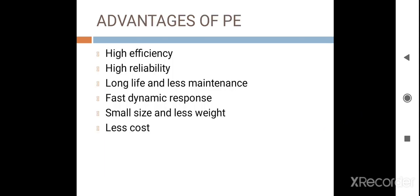If we talk about the advantages of power electronics, we should first consider efficiency — power electronics devices have high efficiency. They also have high reliability, long life, and less maintenance. They have fast dynamic response, are small in size, light in weight, and are of less cost. Because of these advantages, power electronic devices are widely used in different industrial applications.